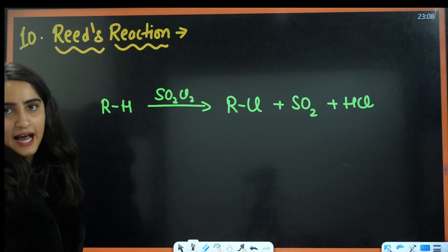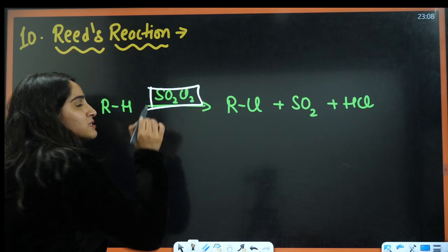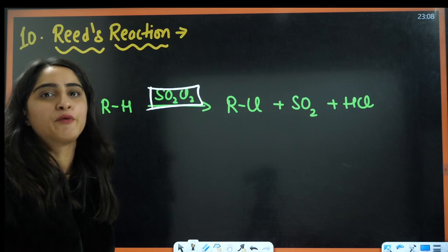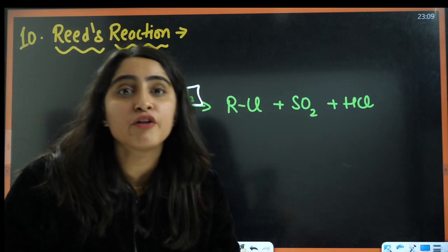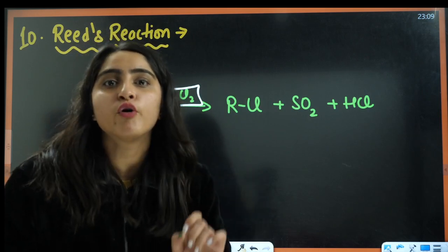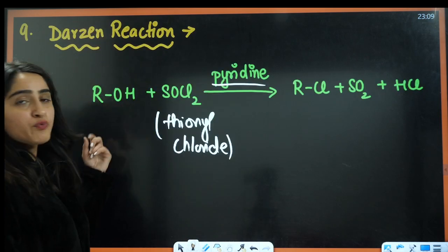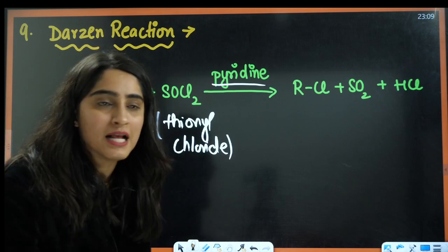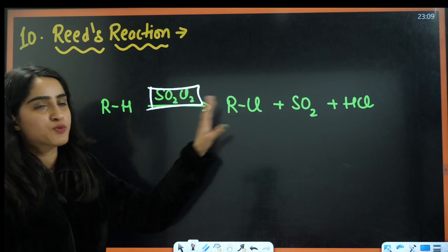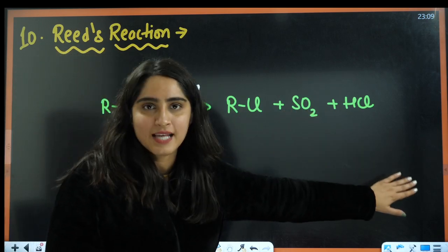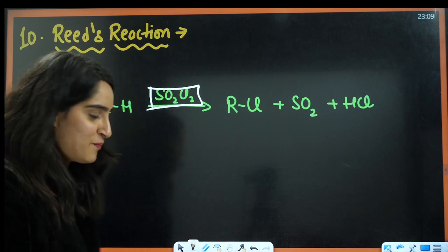Next is Reed reaction, which is almost similar to Darzen. Here it is not thionyl chloride — this is SO₂Cl₂, i.e., sulfonyl chloride. And in Reed reaction, the reactant is alkane and this H is replaced by Cl. The by-products vaporize and RCl is formed.